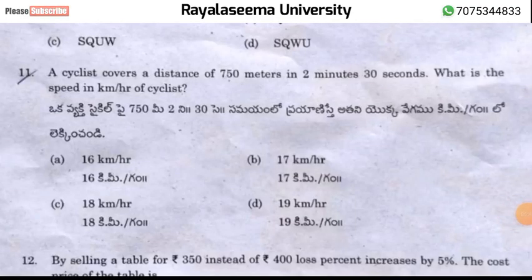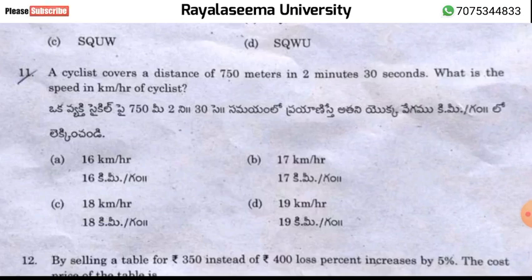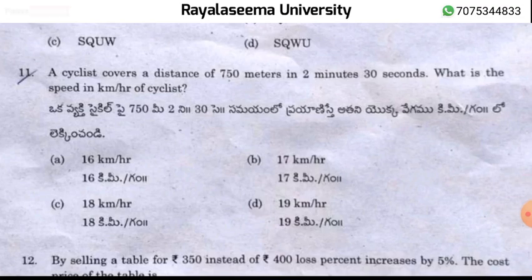Question number 11: A cyclist covers 750 meters in 2 minutes 30 seconds. To find the speed in km/hr, convert to meters per second first, then multiply by 18/5 to convert to km/hr. The answer is 18 km per hour — option C is correct.